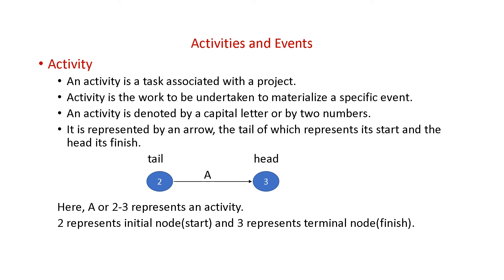Now some important terms are there. Activity. That's the first term. So this activity is a task associated with a project. It is a job associated with a project. Here these are the nodes or the events. Two, three are the nodes or the events and A is the activity. This is the activity which is being performed between the node two and the node three. Between the source and the destination. That is activity is a work to be undertaken to materialize a specific event. Activity is denoted by a capital letter or any two numbers. Any two numbers means you see if this activity can be represented by a or it can be represented by two to three. See this two to three. This way also you can represent an activity. That is what written here two numbers.